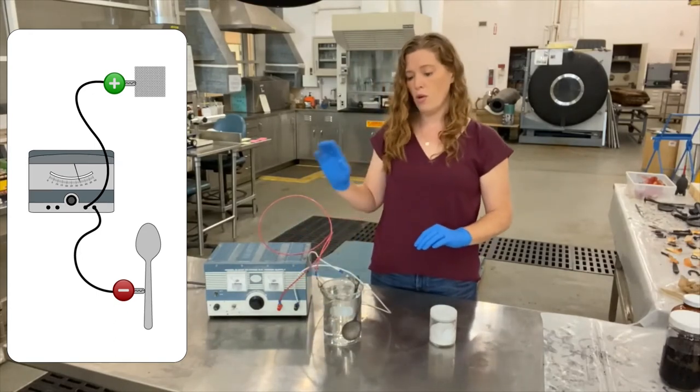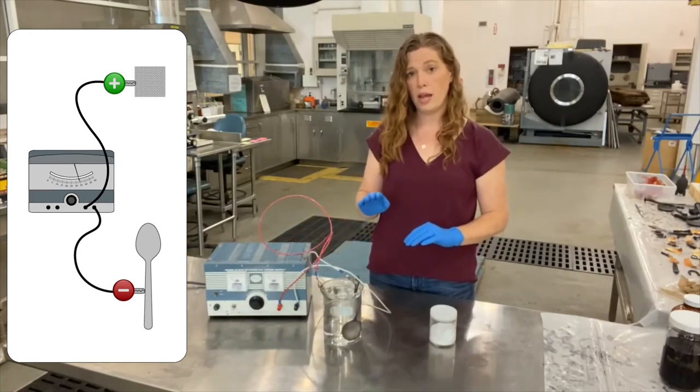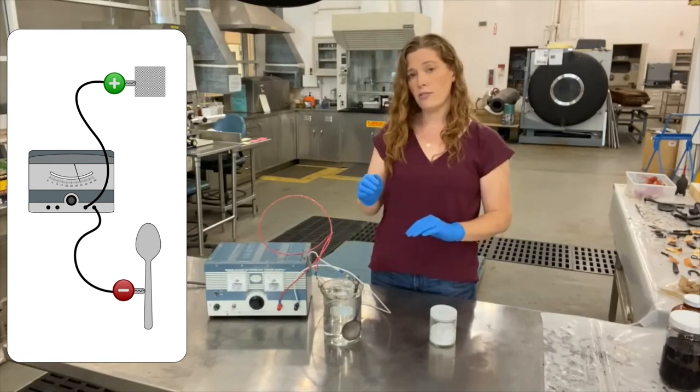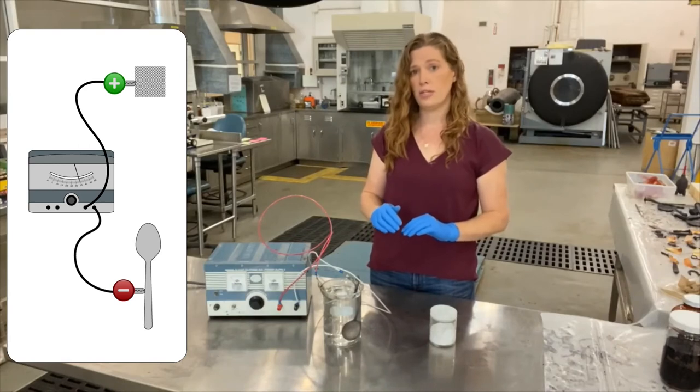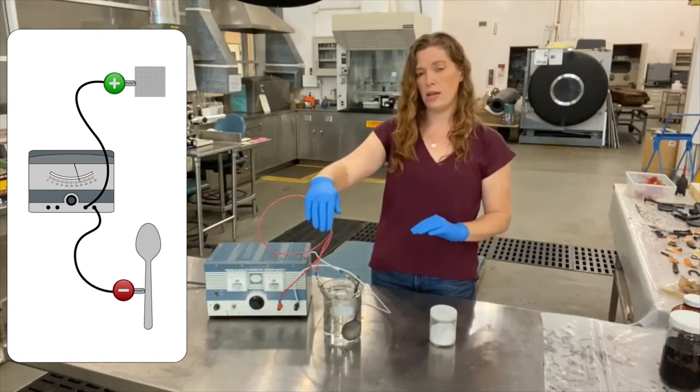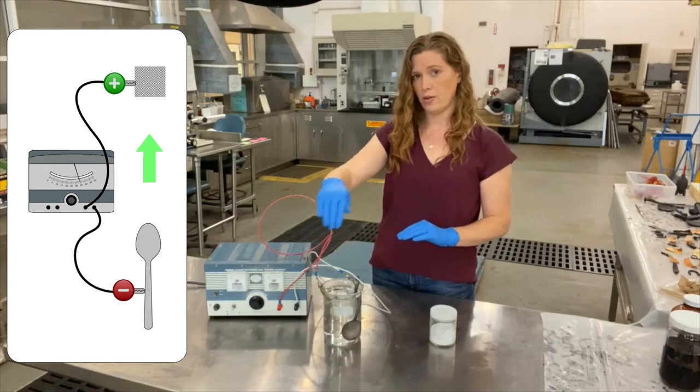When we turn on the electricity we have now made our spoon negatively charged. The negative tarnish is no longer going to be attracted to the surface and it's instead going to be attracted to the highly positively charged sacrificial anode.